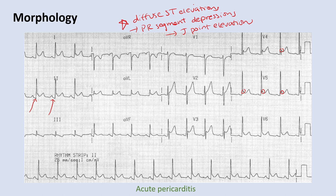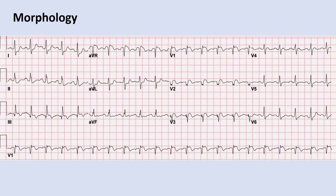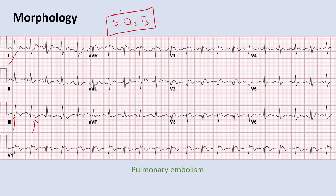In this EKG, you see an S wave in lead 1, a Q wave in lead 3, and an inverted T wave in lead 3 — the S1Q3T3 pattern, which is pathognomonic for pulmonary embolism. This is a commonly tested question. However, note the trick question: the most common EKG finding in pulmonary embolism is actually sinus tachycardia, not S1Q3T3. Also, S1Q3T3 can be seen in other causes of right heart strain such as pulmonary hypertension, right ventricular hypertrophy, or right atrial enlargement, so it's not exclusively PE.